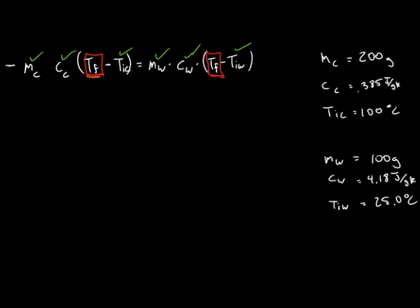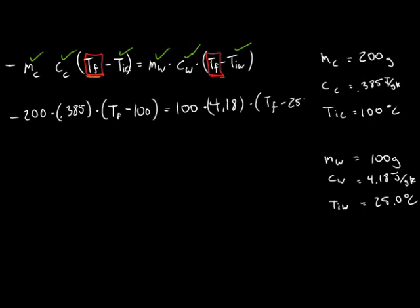Let's place what we know into this equation. The mass of copper is 200 grams. Specific heat is 0.385 joules per gram kelvin. We'll multiply this times T final, which we don't know, minus the initial temperature, which is 100 degrees Celsius. We'll set this equal to the mass of the water, which is 100 grams, times 4.18 joules per gram kelvin, times T final, minus 25 degrees Celsius. We'll begin by multiplying the negative 200 times the 0.385. If we do this, we'll get negative 77, still times Tf minus 100. On the right, we'll take 100 times 4.18 and get 418, times Tf minus 25.